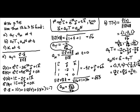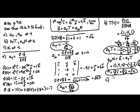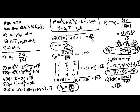Part C asks us to find the curvature at zero. The curvature formula from theorem 13.6.3 is the norm of V cross A divided by the norm of V cubed. The norm of V cross A is the square root of 53, and the norm of V is the square root of 6, which we cube to get 6 root 6. So the curvature kappa at zero equals the square root of 53 divided by 6 root 6.